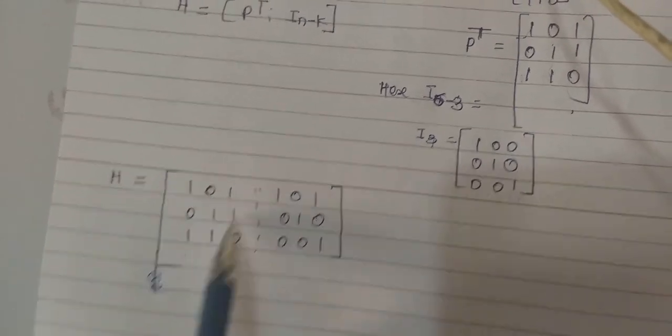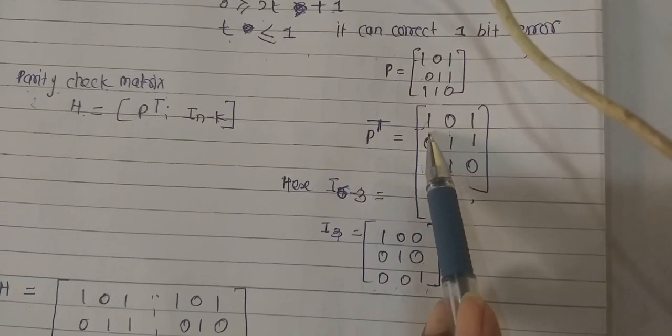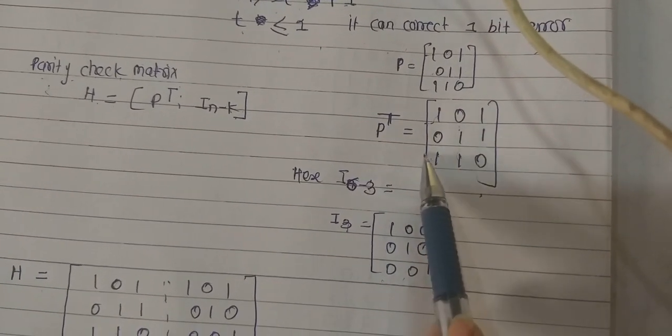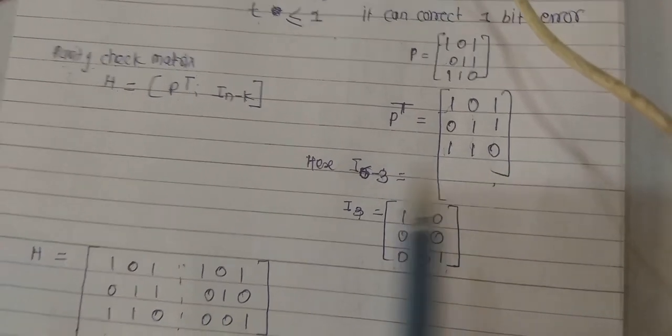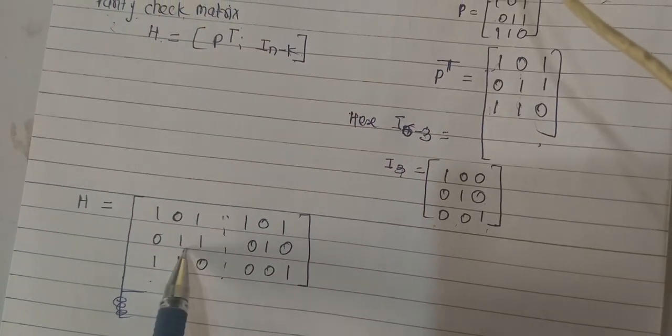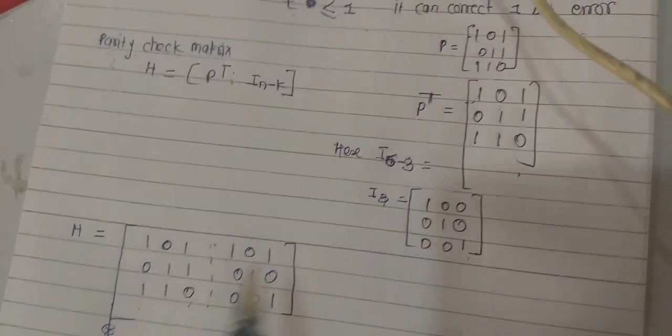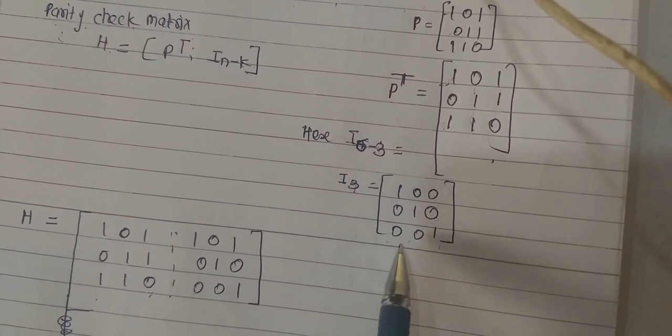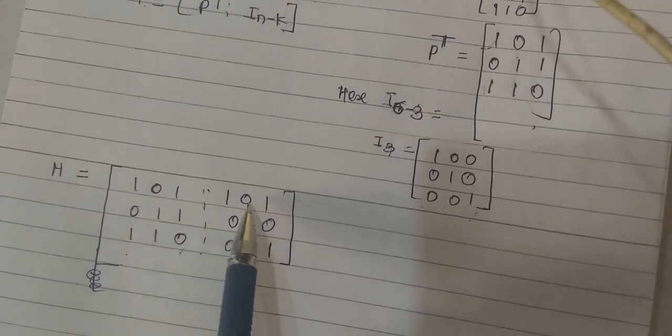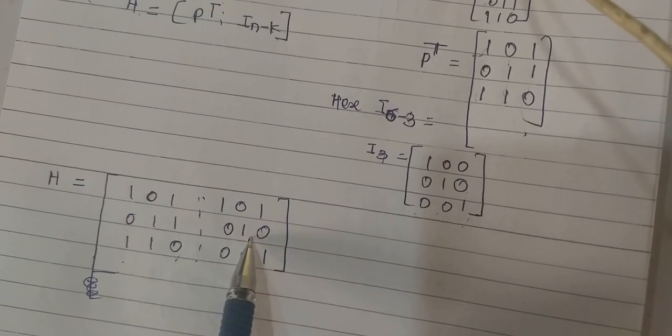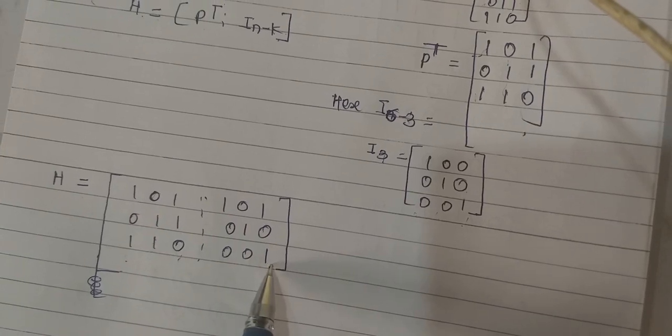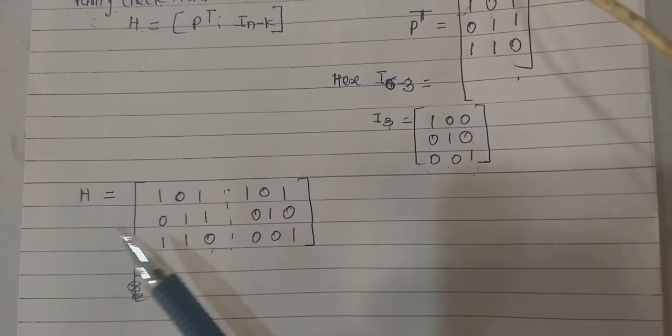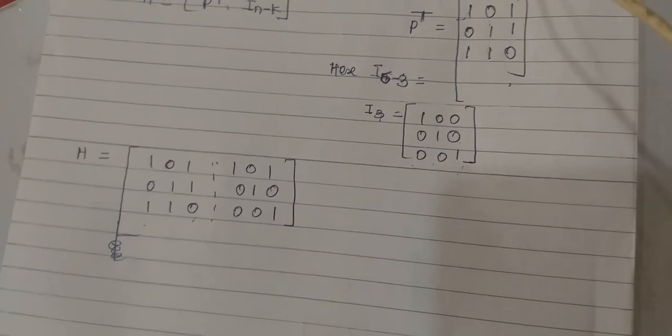Write H as P transpose. Transpose matrix is 101, 011, 110 and 110, and the identity matrix is in the diagram: 100, 010, 001. So 101, 010 and 001. By using this H we can find the error.